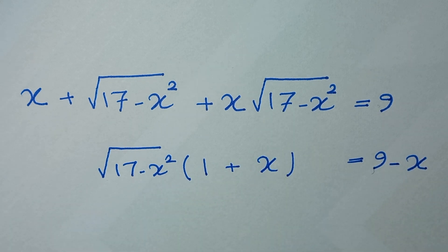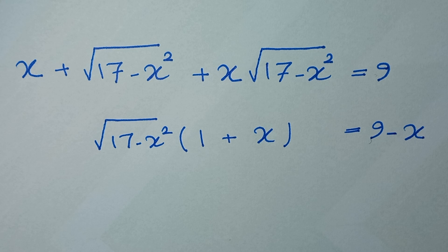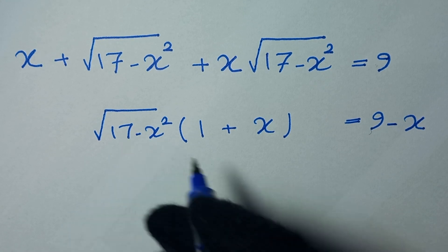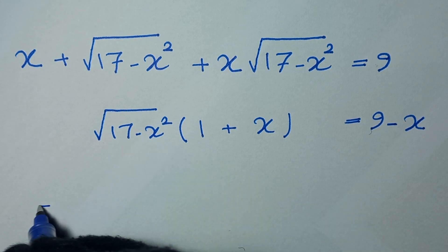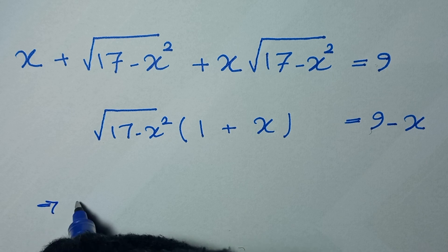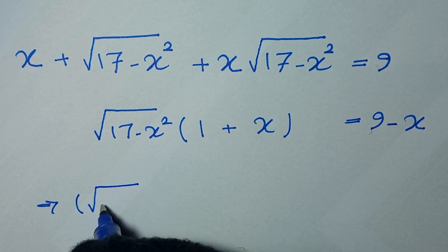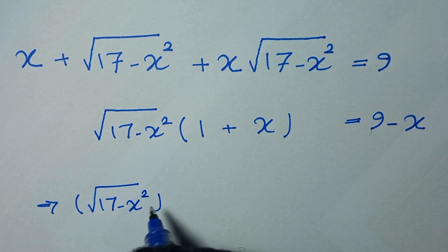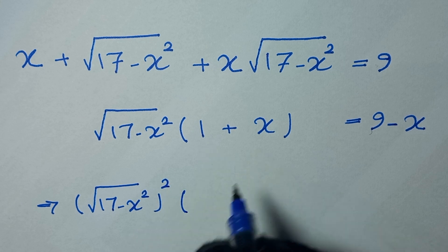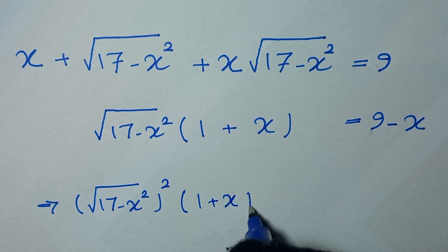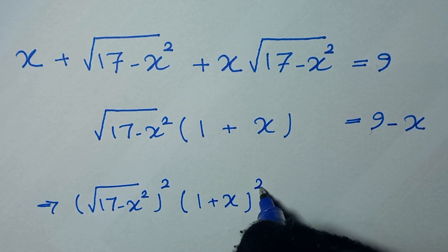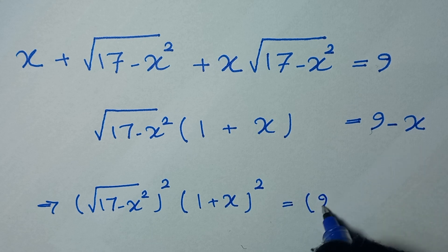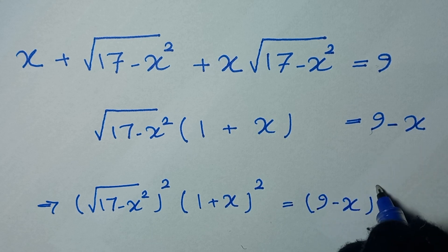In the next step the square goes to this equation, and it will be this to the power of 2. We write square root of 17 minus x squared to the power of 2, and this to the power of 2, giving 1 plus x to the power of 2, is equal to 9 minus x to the power of 2.